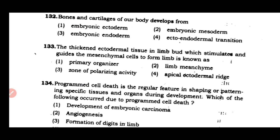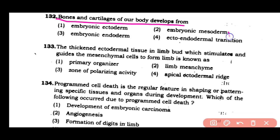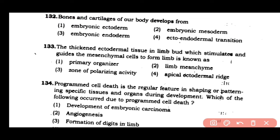Question number 132: Bones and cartilage of our body develop from — (1) embryonic ectoderm, (2) embryonic mesoderm, (3) embryonic endoderm, (4) ecto-endodermal transitions. The correct answer is option 2. Bones and cartilage develop from embryonic mesoderm.